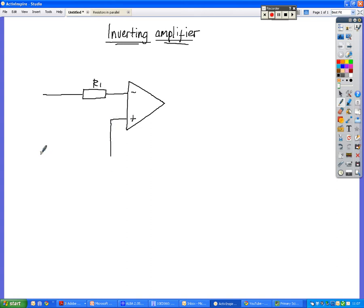The positive terminal is connected to what we call ground, which is zero volts. Because remember, in order to have a potential difference, we've got to have two voltages usually. We've got to have a voltage difference between two points. So the positive terminal doesn't have a resistor connected to it, hence why we're calling it the inverting amplifier.